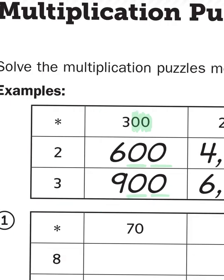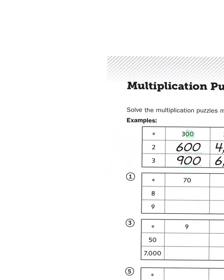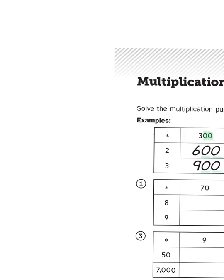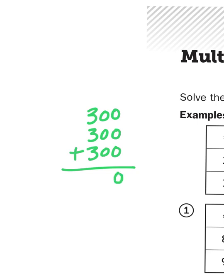Now again, multiplication is just repeated addition. So I could write that problem out as an addition problem. So if I multiply 3 times 300, I'm basically adding 300 to itself three times. And when I'm adding zeros, all I'm doing is just bringing those zeros down to hold my place value.